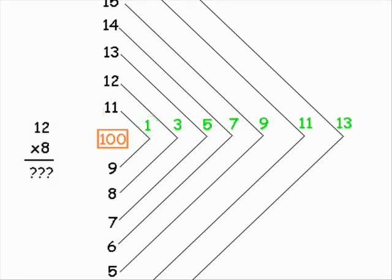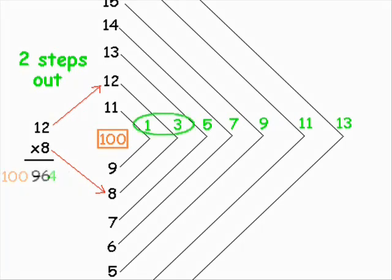And then I thought, if 12 times 8 is two steps out from the middle, then it should be two odds less than the middle. And it was. And I figured,